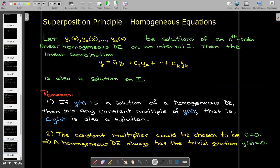And that constant could be chosen to be zero. So c equals zero, which means if I take that solution, multiply it by zero, I get zero. That must be another solution. So every linear homogeneous differential equation has the trivial solution, y of x is identically zero.